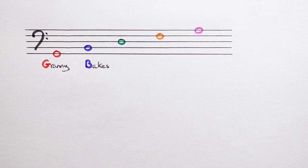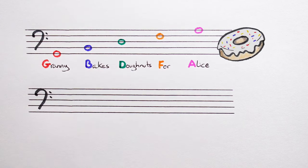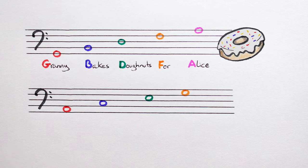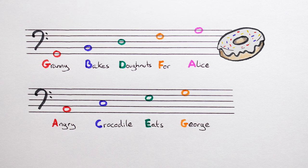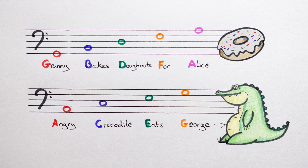For bass clef notes that are on the lines, we can use the rhyme Granny bakes donuts for Alice. And for bass clef notes that are in the spaces, we can use Angry crocodile eats George. Or whatever rhymes your teacher has taught you. Got it? Cool!